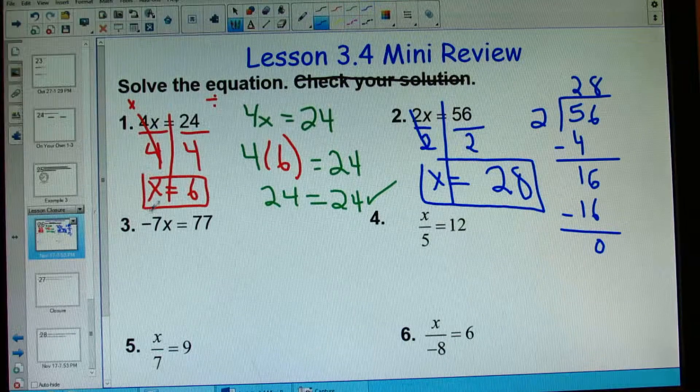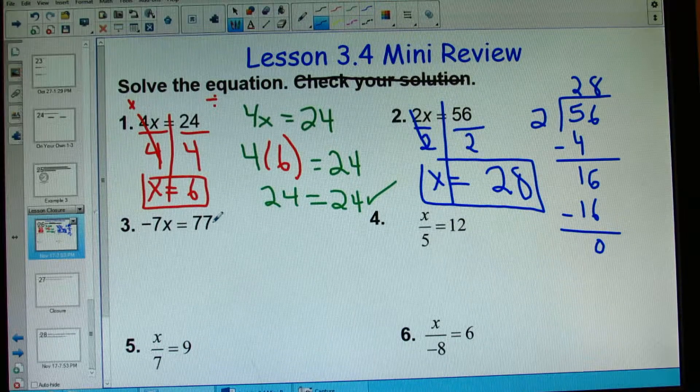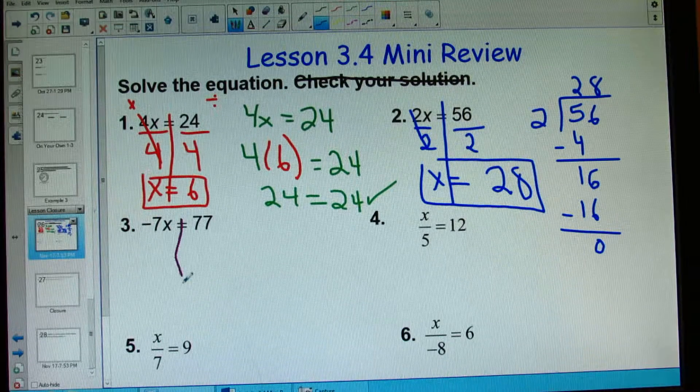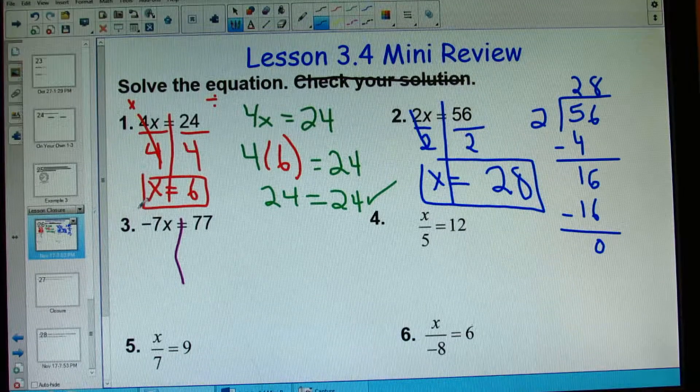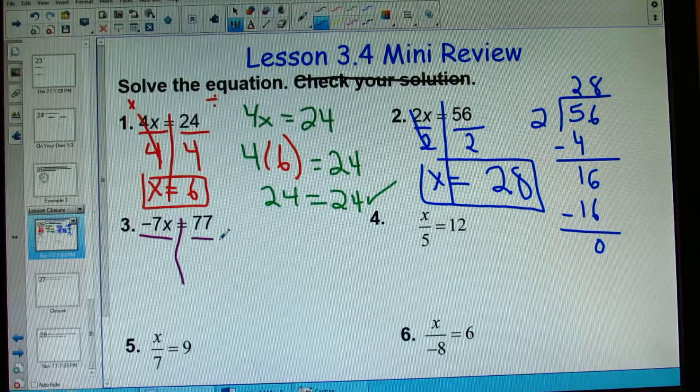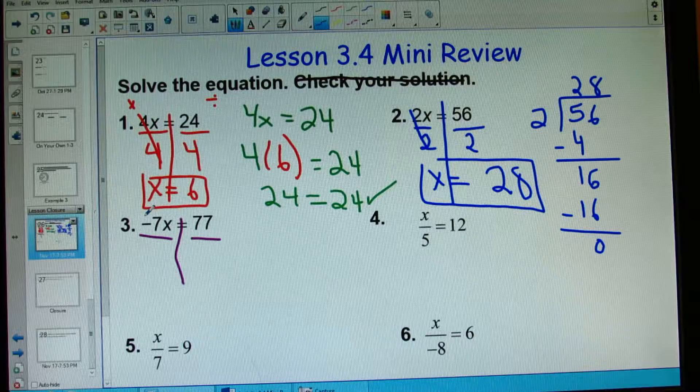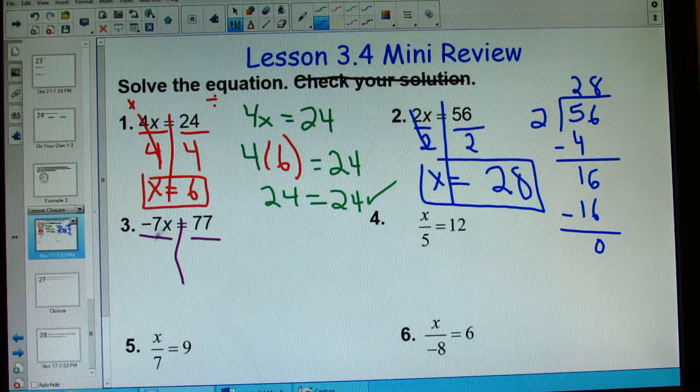Moving along. Negative 7 times x equals 77. A little differently. This time, I have to also divide both sides. The question is, do I divide it by 7 or negative 7?